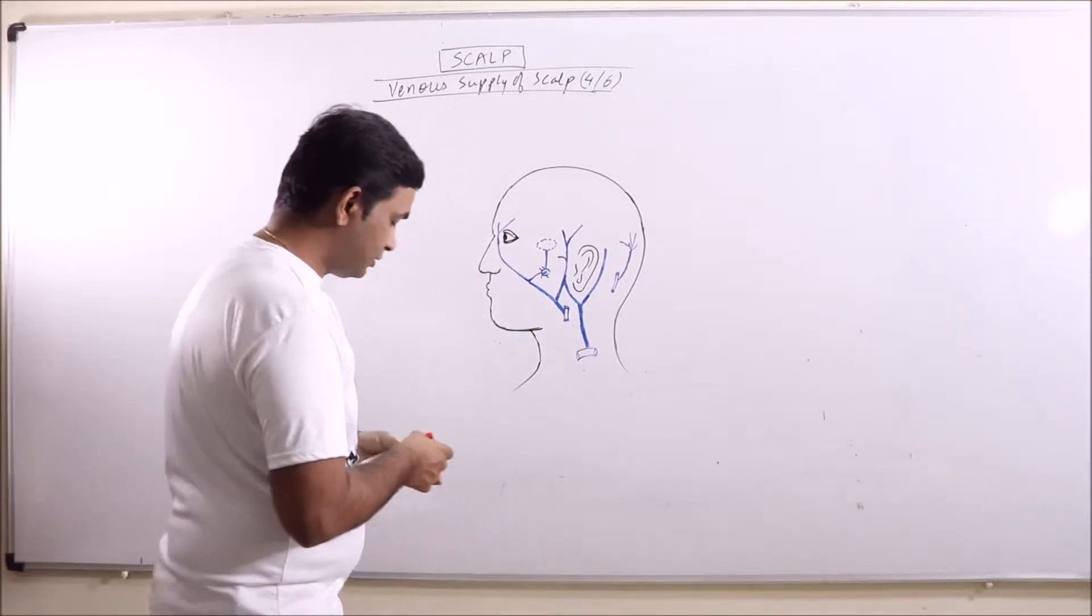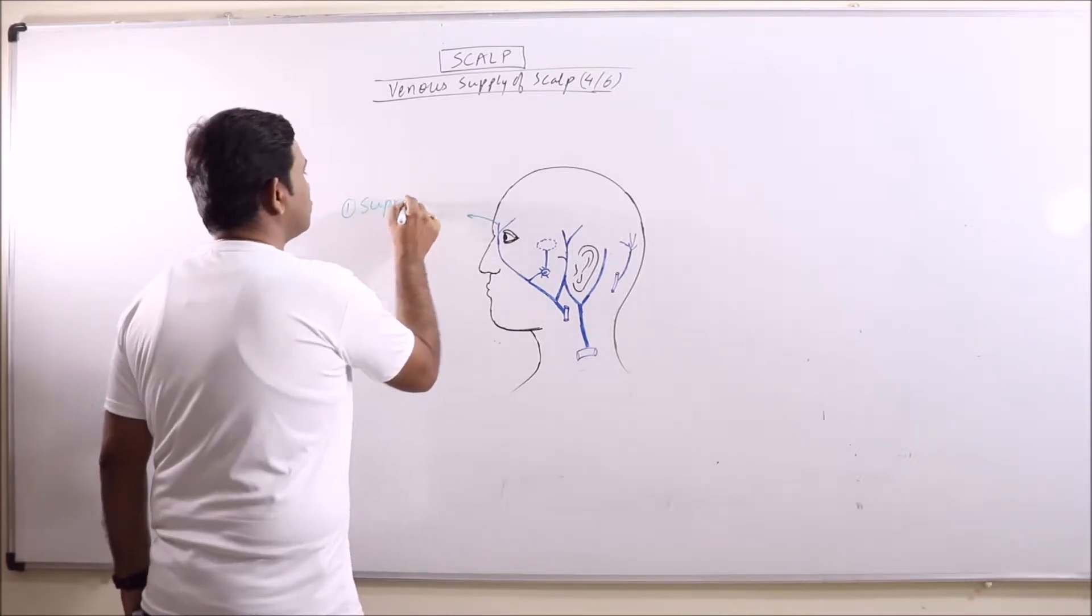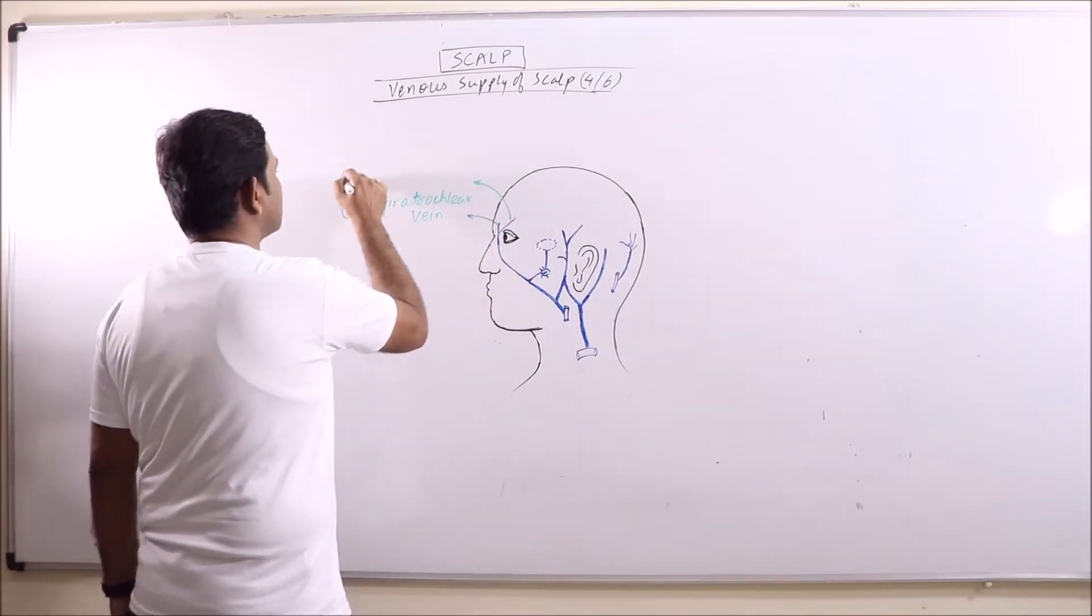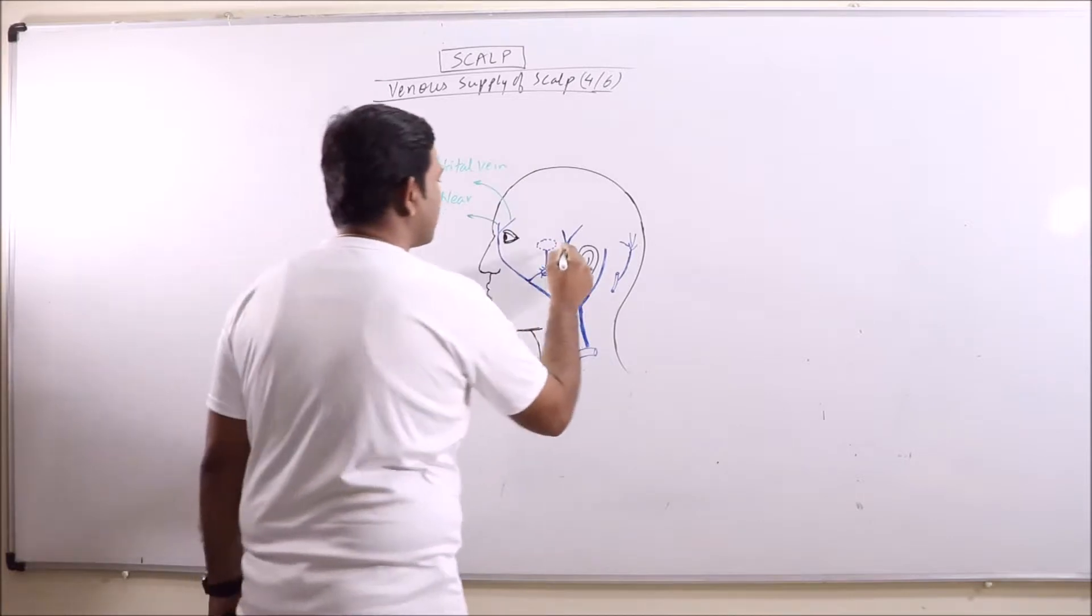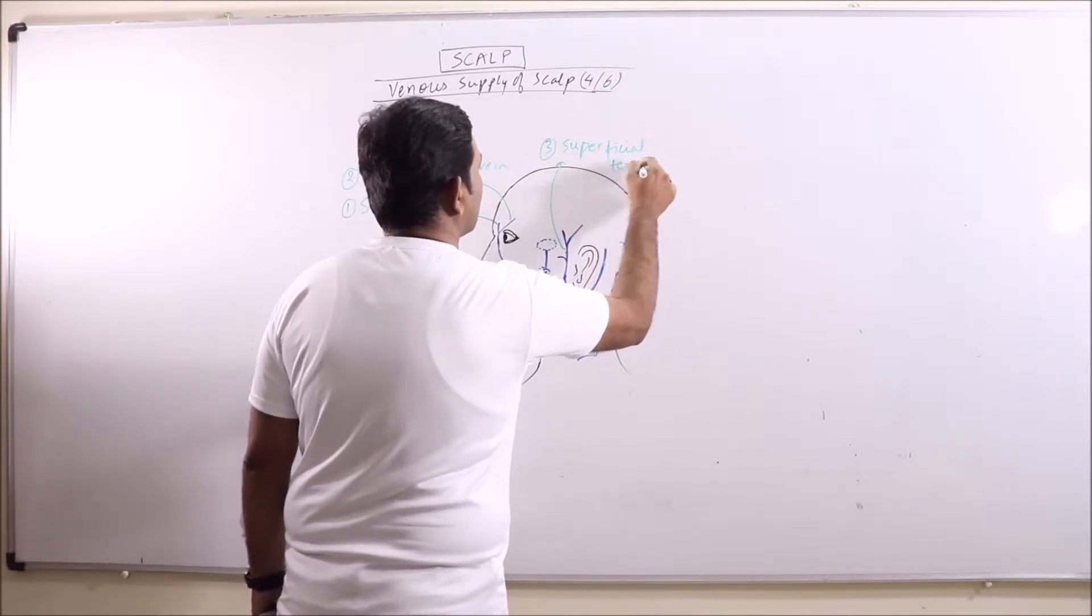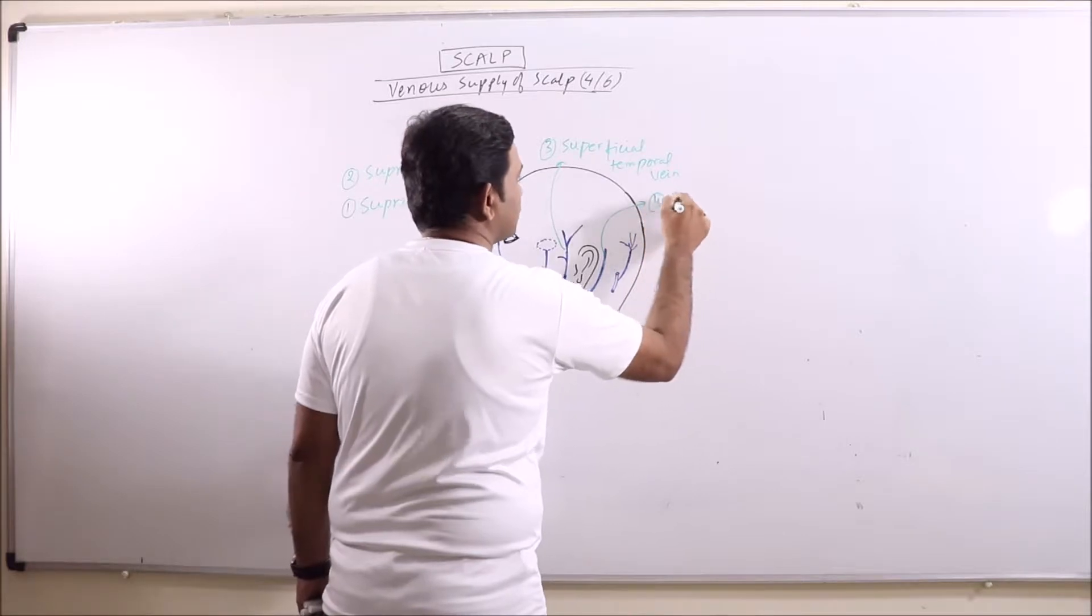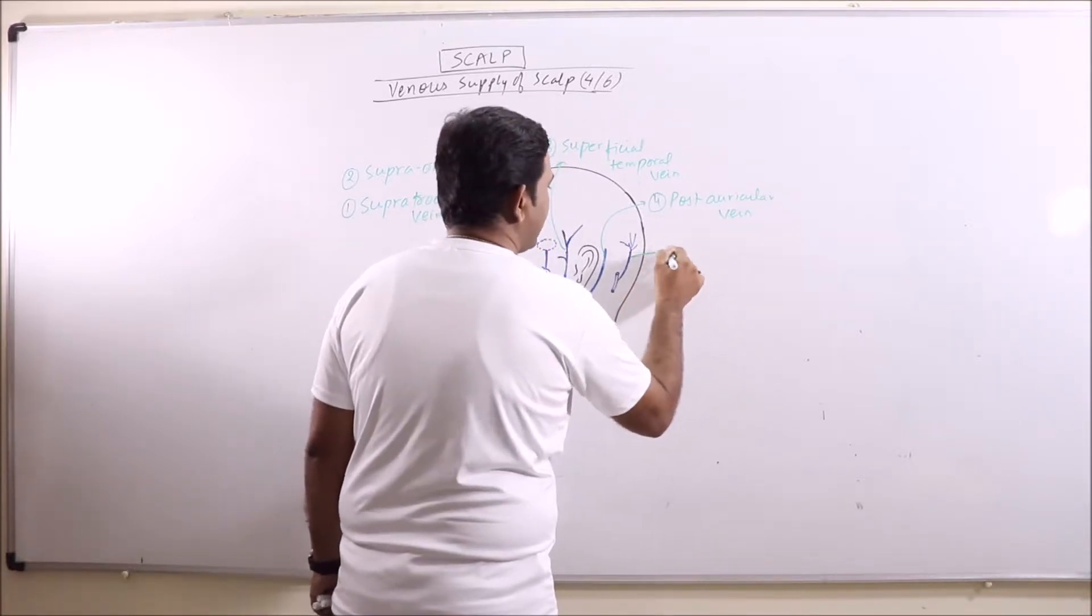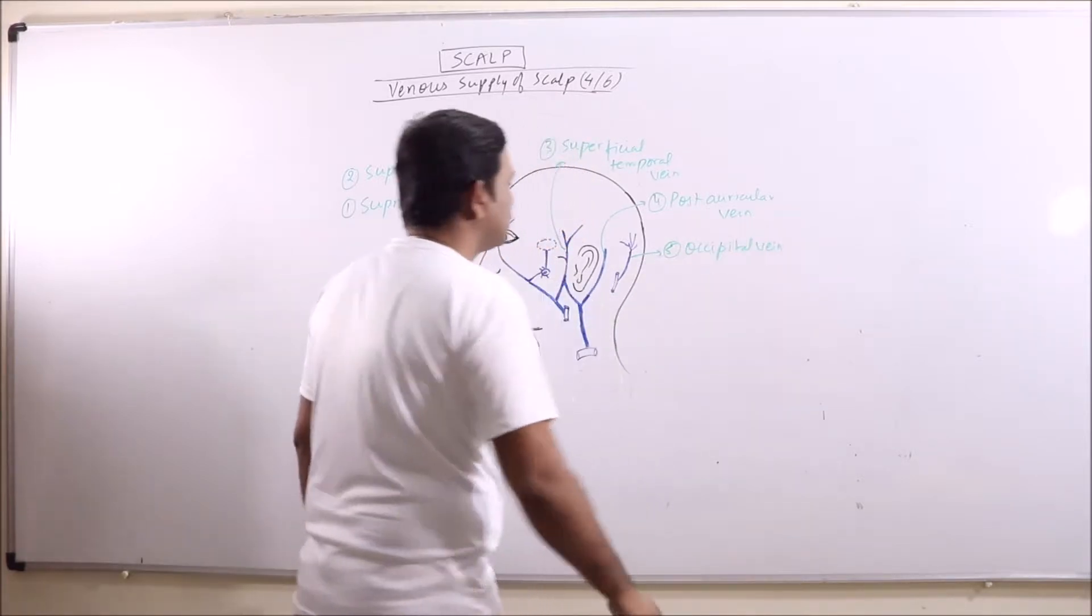Venous drainage of scalp is basically mediated by five important veins. This one is supra-trochlear vein. This is superficial temporal vein. This one is posterior auricular vein and this is occipital vein. So these five veins drain the scalp.